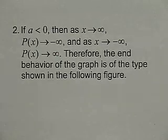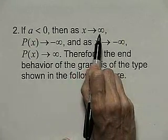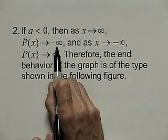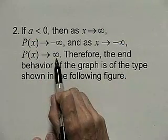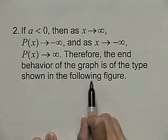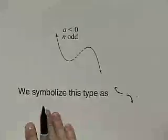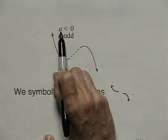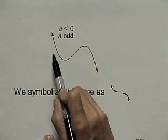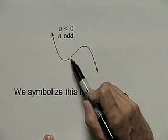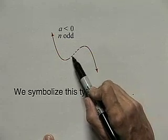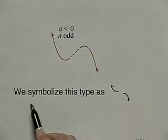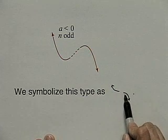If a is less than zero and n is odd degree, then as x goes to positive infinity, p of x goes to negative infinity, and as x goes to negative infinity, p of x goes to positive infinity. The end behavior of the graph is of the type shown. The leading coefficient is negative. Remember that the dotted line indicates smooth but irregular behavior. The symbol for this type of end behavior is as indicated here.